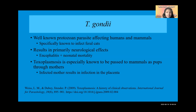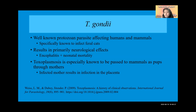Unlike U. sanguinis and A. microchir, toxoplasmosis doesn't result in hematological effects at the start. It first presents with neurological effects, specifically encephalitis and neonatal mortality. Toxoplasmosis can infect fetuses while they are still in the mother's uterus — infection passes through the placenta, which is why pregnant mothers are advised to avoid cat litter.